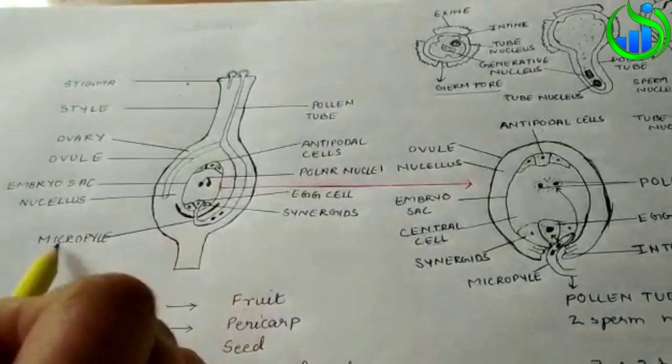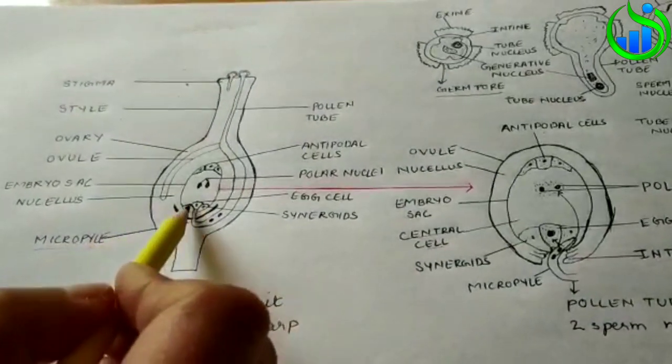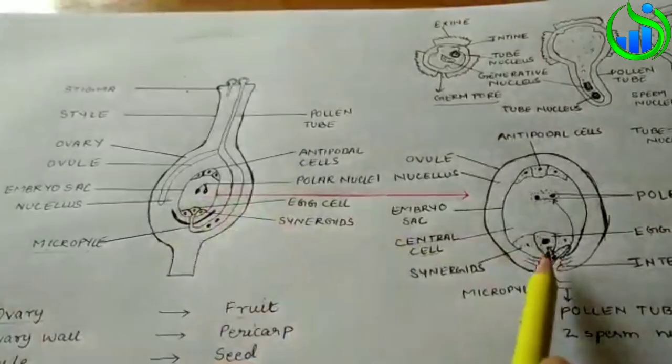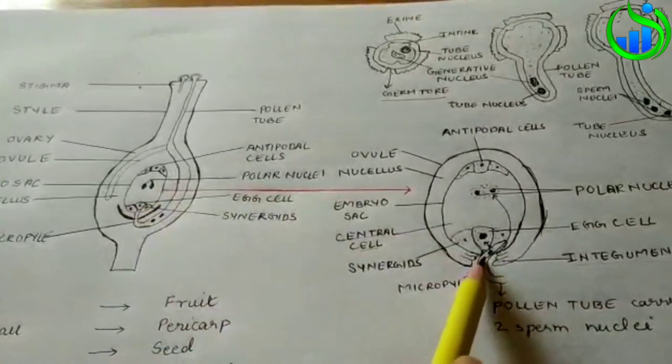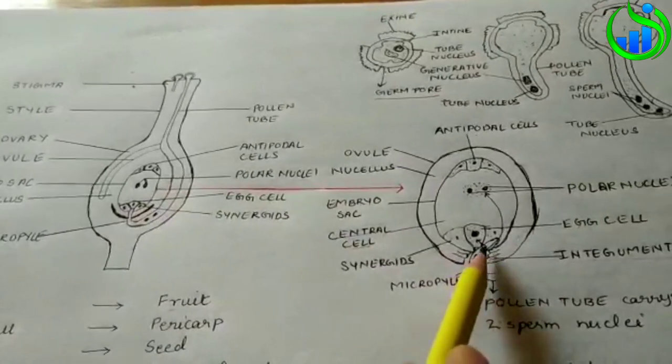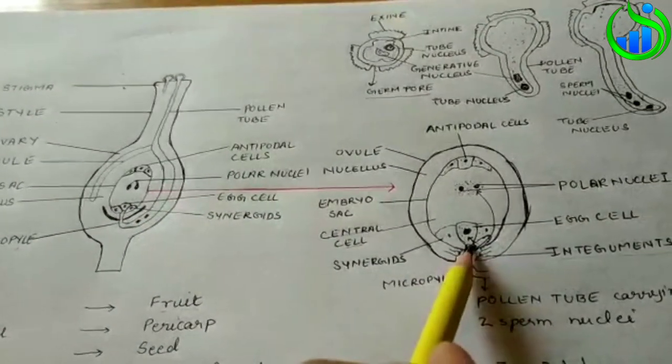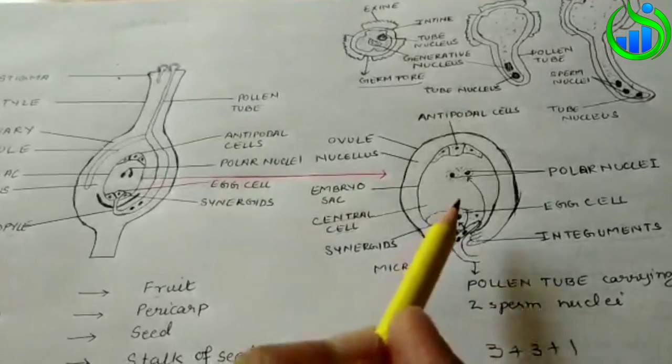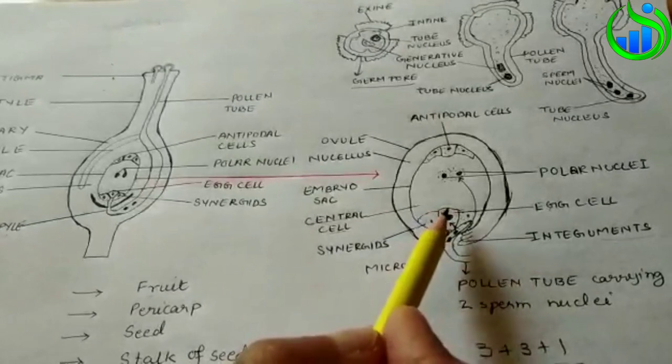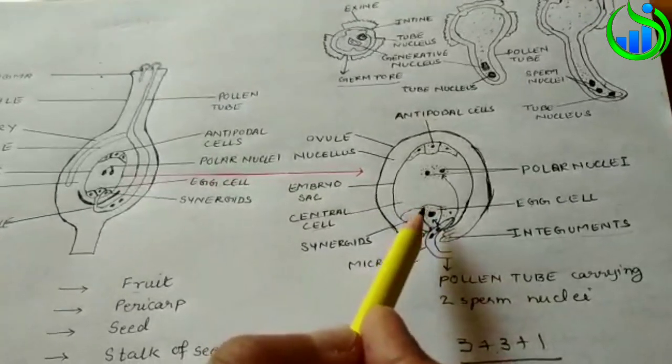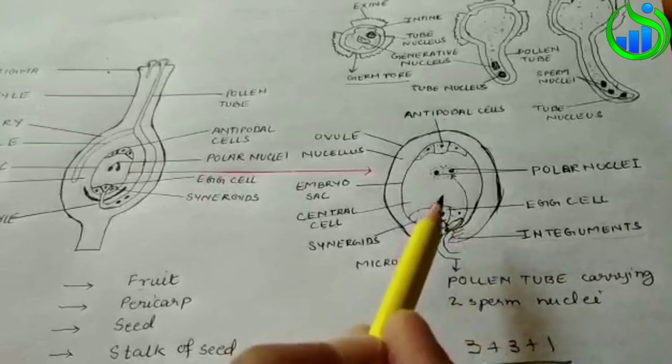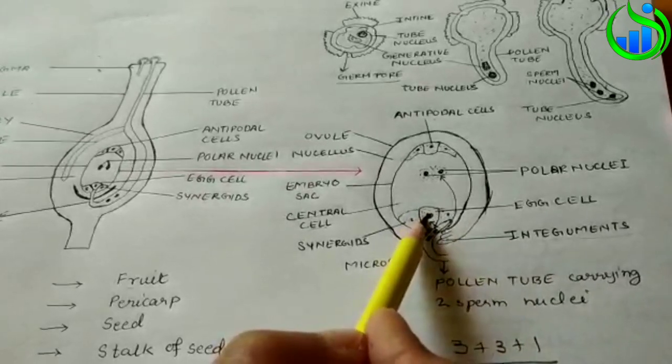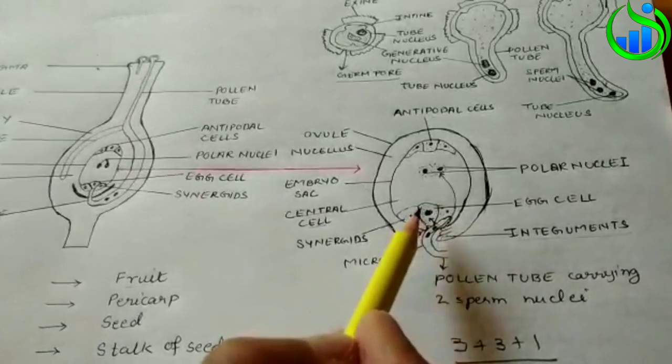The cell is called antipodal cells. Then the fertilization. They process the class 12th. They use syngamy. They're using syngamy so that they can get the male nucleus and egg nucleus fused together.